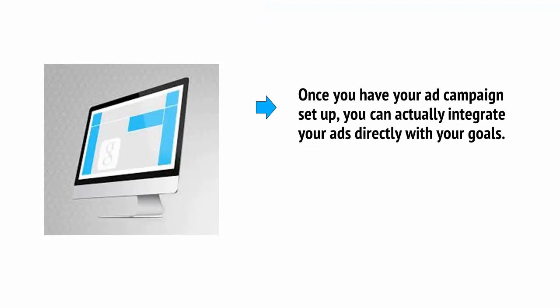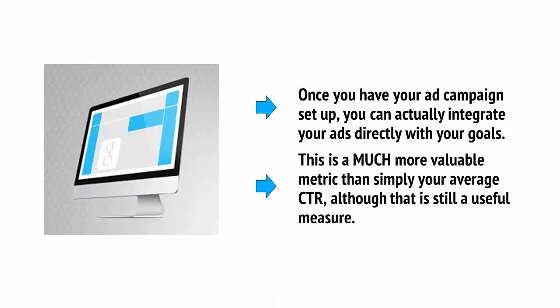You can use Bing Ads to set up goals and then see how customers are interacting with those goals. We discussed goals in an earlier video in the context of Google Analytics, and how you could use these to identify the best keywords for your ad campaigns. Once you have your ad campaign set up, you can actually integrate your ads directly with your goals. This is a much more valuable metric than simply your average CTR, or click-through rate, although that is still a useful measure.